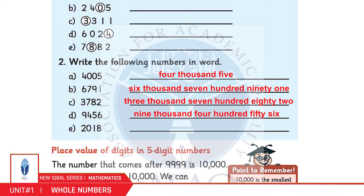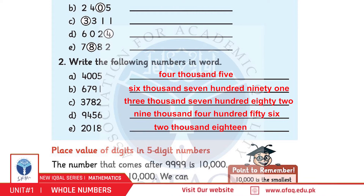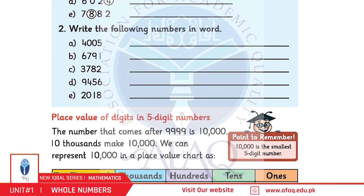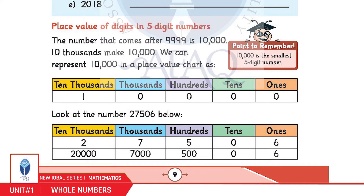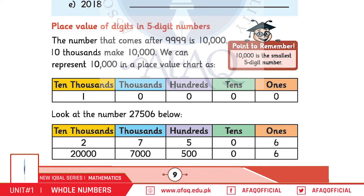D: 9456. E: 2018. Place Value of digits in 5-digit numbers. बच्चो, 5-digit number के place values होंगे: Ones, Tens, Hundreds, Thousands, and Ten Thousands।